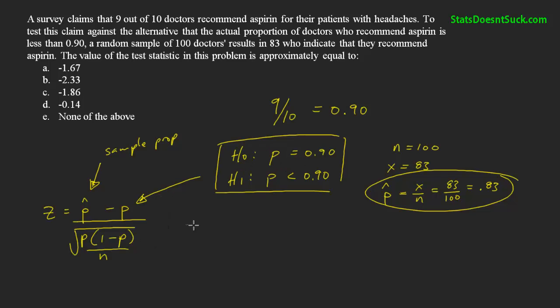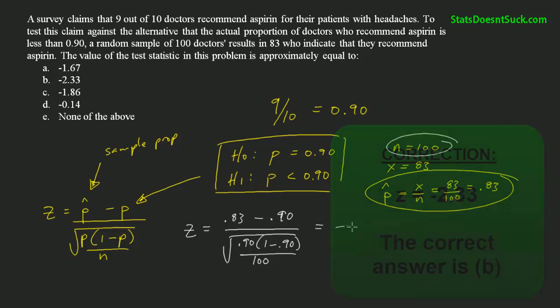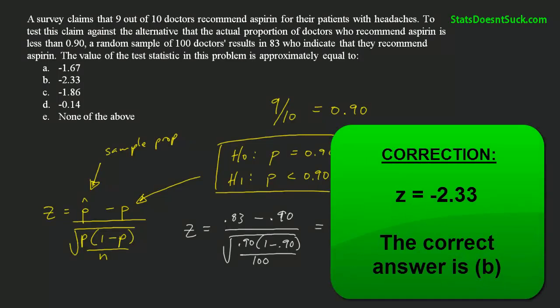So this is going to be calculated as follows: it's going to be 0.83 minus 0.90, over the square root of 0.90 times 1 minus 0.90, divided by n. n, they told us, is 100. And so when you calculate this out, it comes out to be negative 2.33.